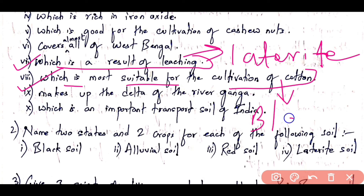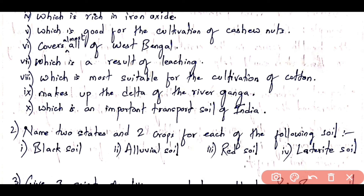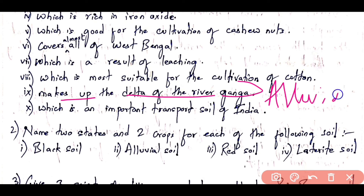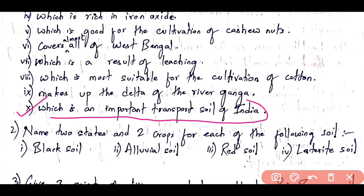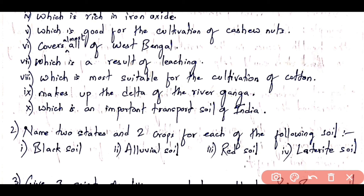Question 8: the soil which is most suitable for the cultivation of cotton is black soil. Question 9: the soil which makes up the delta of the river Ganga is alluvial soil. Question 10: the soil which is an important transport soil of India is also alluvial soil. Remember the spelling: A-L-L-U-V-I-A-L.